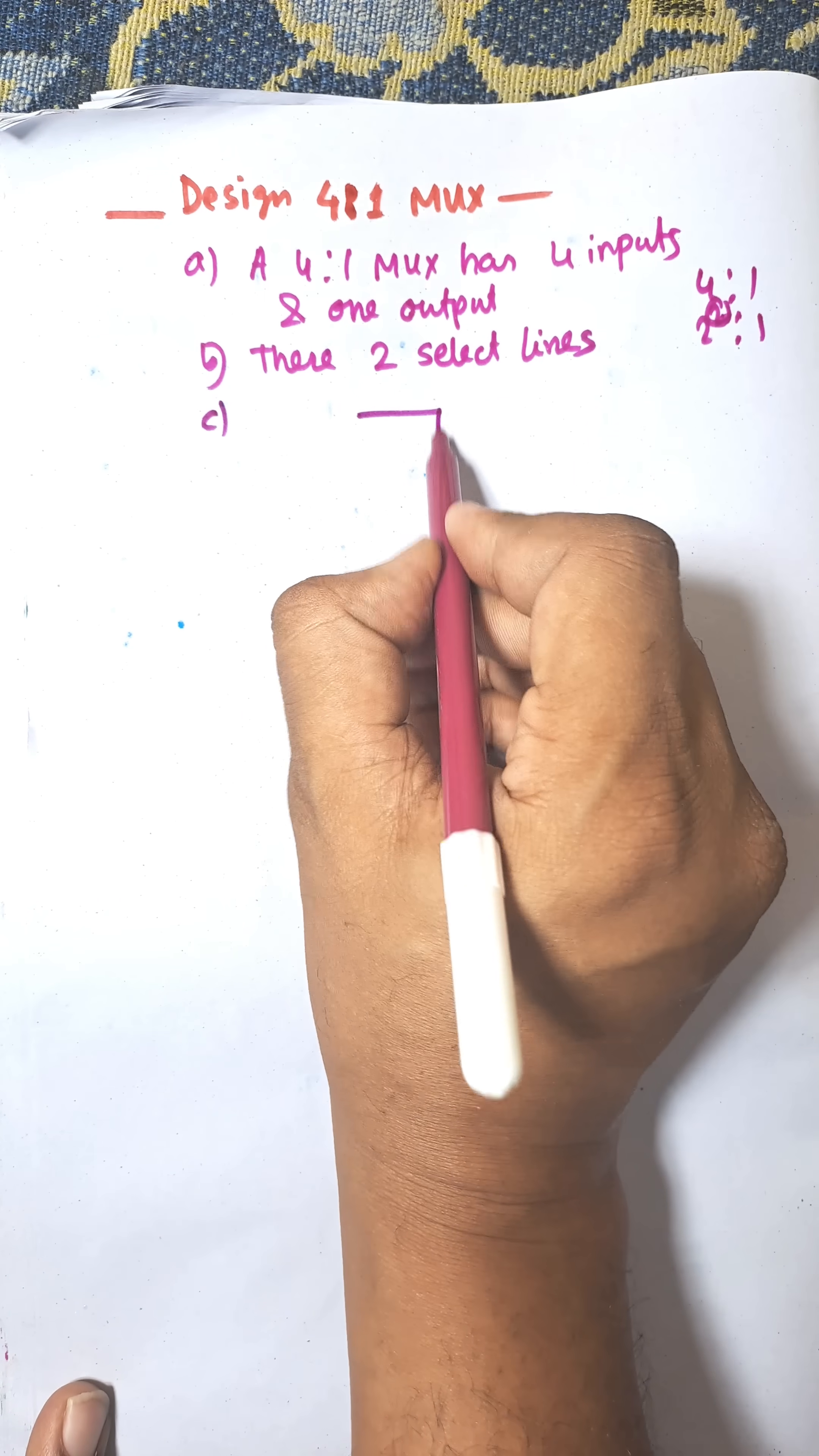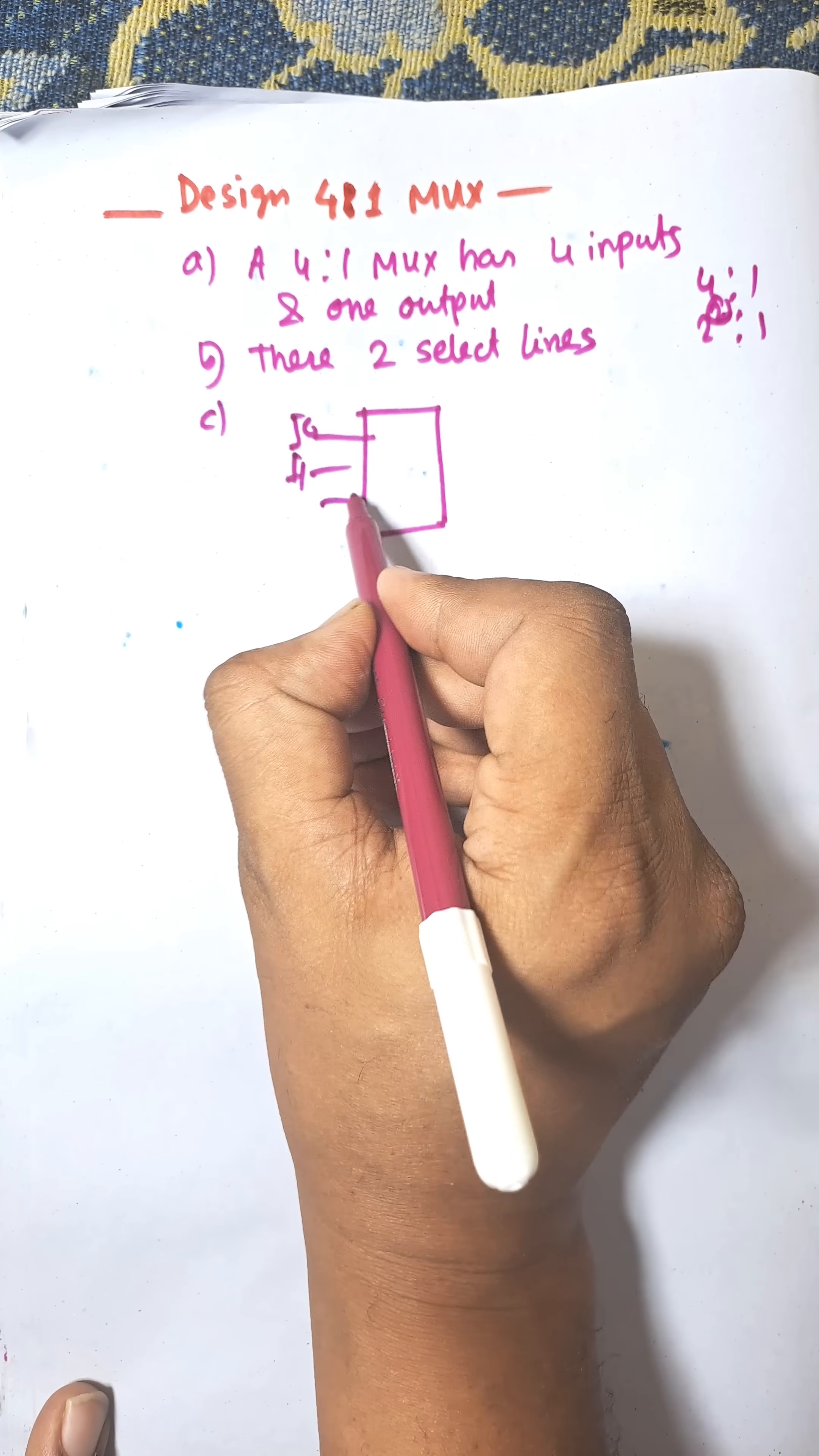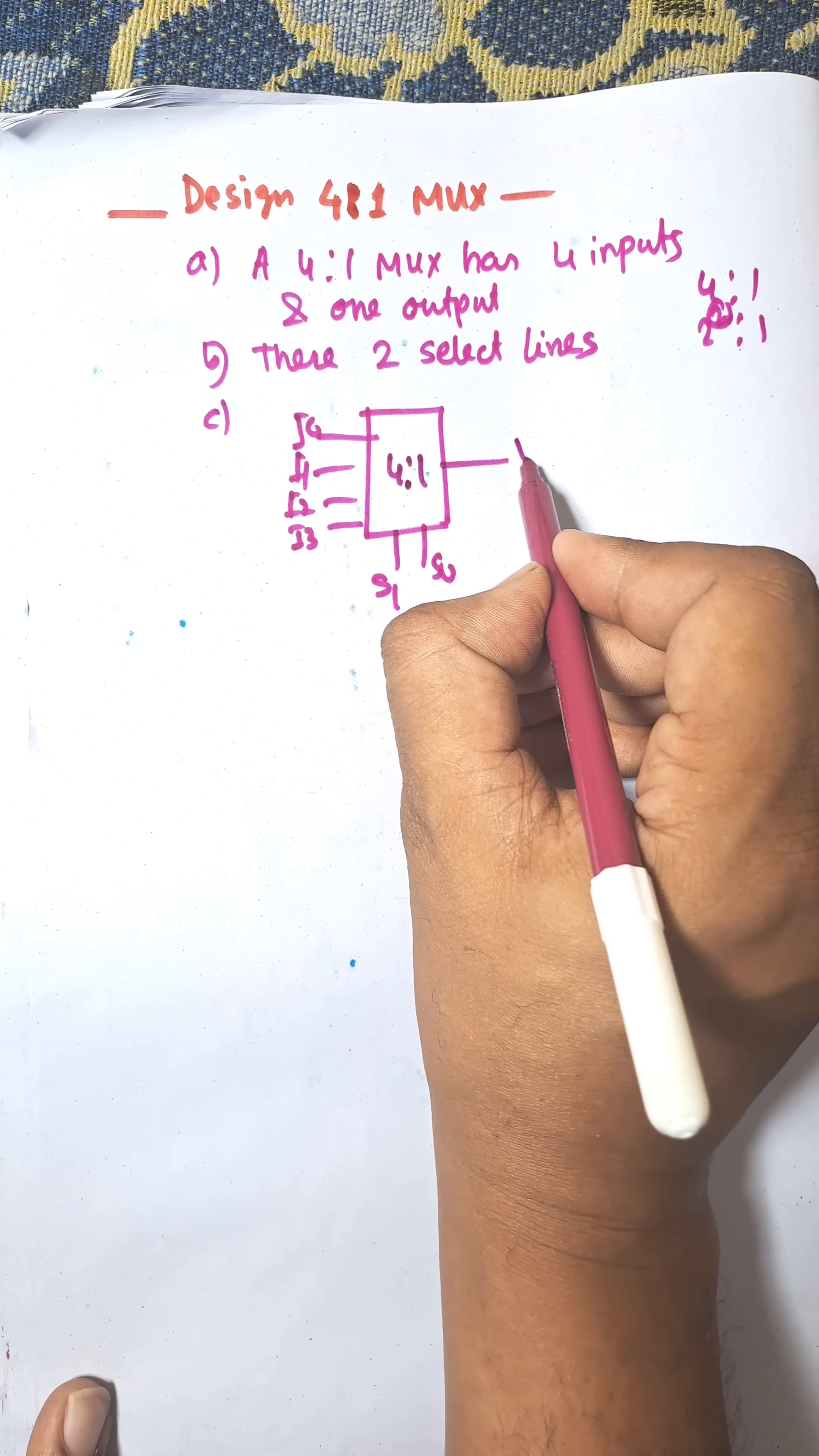Now the block diagram. It's based on I0, I1, I2, I3, select lines S0 and S1, and there is only one output that is Y.